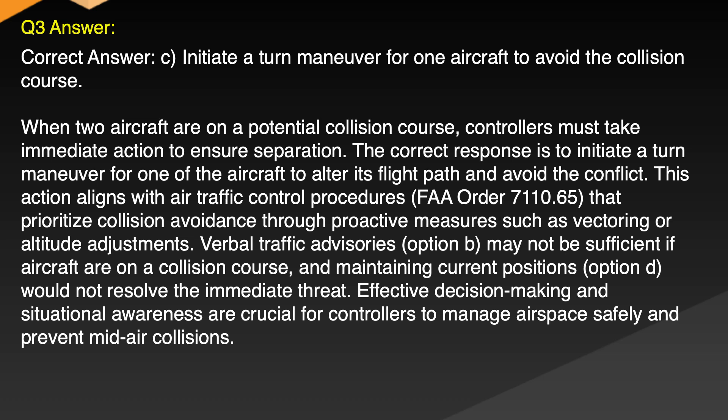When two aircraft are on a potential collision course, controllers must take immediate action to ensure separation. The correct response is to initiate a turn maneuver for one of the aircraft to alter its flight path and avoid the conflict. This action aligns with FAA Order 7110.65, which prioritizes collision avoidance through proactive measures such as vectoring or altitude adjustments. Verbal traffic advisories may not be sufficient if aircraft are on a collision course, and maintaining current positions would not resolve the immediate threat. Effective decision making and situational awareness are crucial for controllers to manage airspace safely and prevent mid-air collisions.